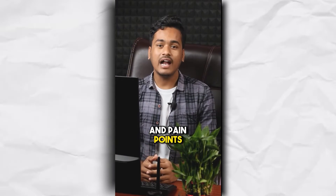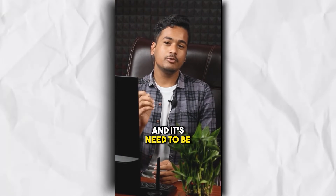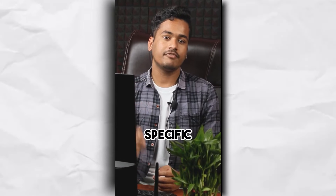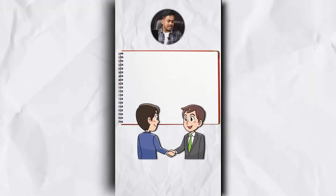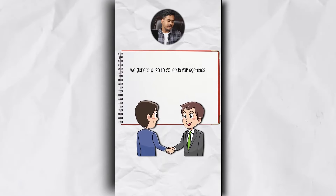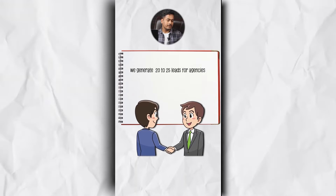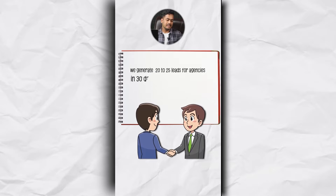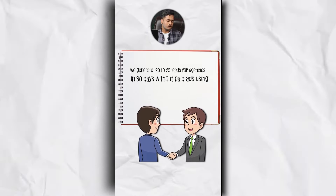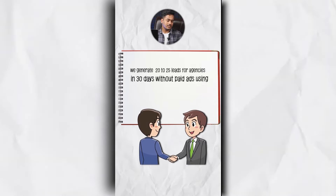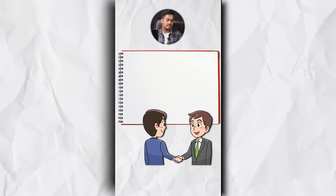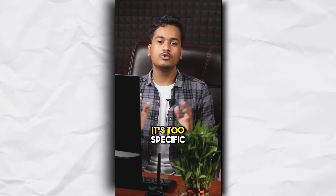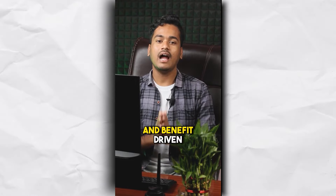Your headline needs to handle objections and pain points, and it needs to be very specific. For example: 'We generate 20–25 leads for agencies in 30 days without paid ads using our market-proven LinkedIn system.' It's specific and benefit-driven.